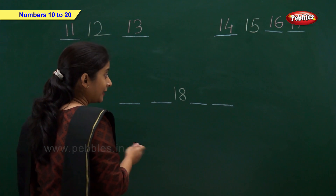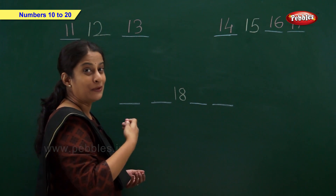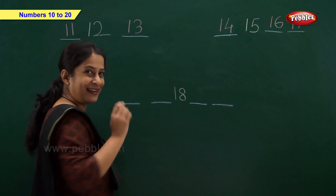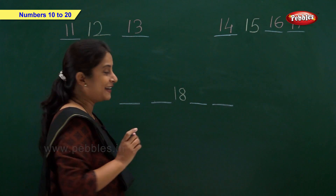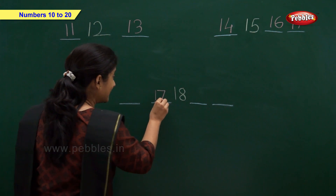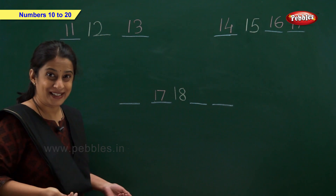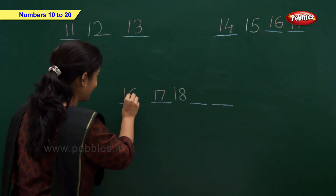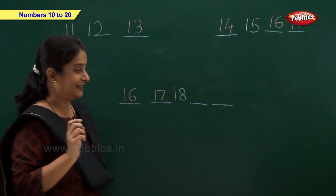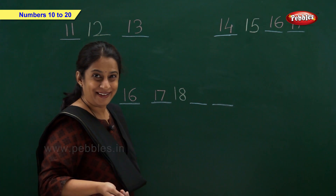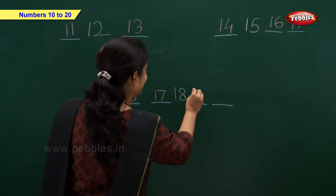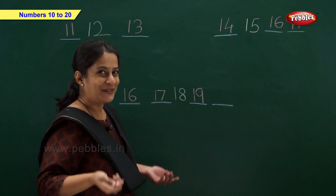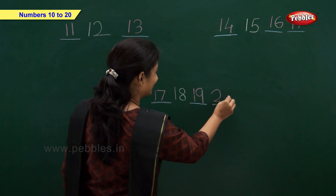And here we have two numbers before 18 and two numbers after 18. Before: which number comes before 18? Very good — number 17. And which number comes before 17? Number 16. Now after 18: which number comes after 18? Number 19. And after 19 — 2 and 0, 20!